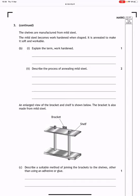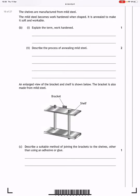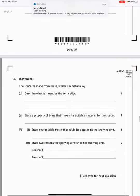An enlarged view of the bracket and shelf is shown below. The bracket is also made from mild steel. Describe a suitable method of joining the brackets to the shelves other than using an adhesive or glue. Well, you could rivet these. You could use rivets. You could use machine screws. It could be welded. It could be brazed, which is a hard soldering technique. Any of these methods would be acceptable.